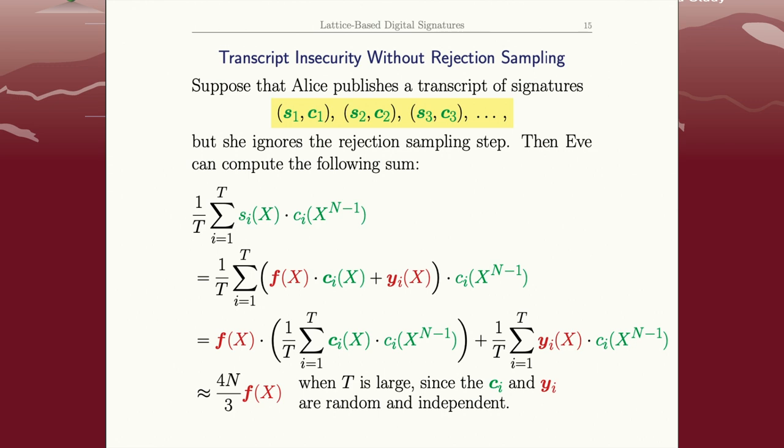Okay, well what is the signature? What does it look like? It looks like the thing in the big parentheses here. That was just how Alice created them. The i-th signature is her private key times the thing that came out of the hash for the i-th signature times the random polynomial she chose for the i-th signature.